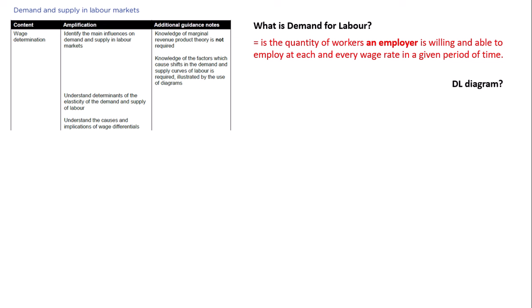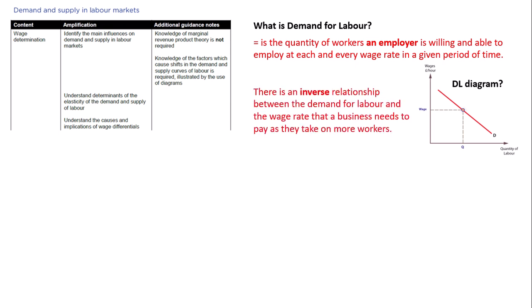The next thing I need you to do is pause the video and draw a demand for labour diagram. Hopefully you've got something that resembles this — a downward sloping demand curve. The key thing to take away here is the axes being labelled correctly: wages or wage rate on the y-axis, and quantity demanded of labour on the x-axis. There's an inverse relationship between wage rates and the demand for labour.